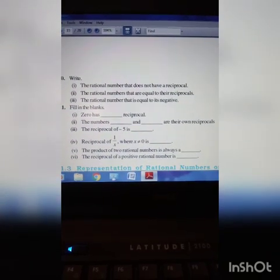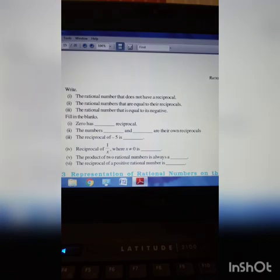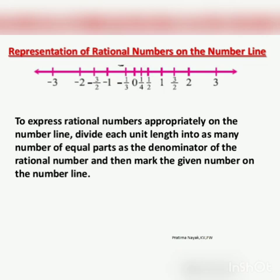Questions 10 and 11 are also there — you can read them. Next is how to represent rational numbers on a number line. In between two numbers there will be infinite rational numbers. In between 0 and 1, countless numbers will be there. We are going to find rational numbers between two given numbers — those problems we are going to discuss today.